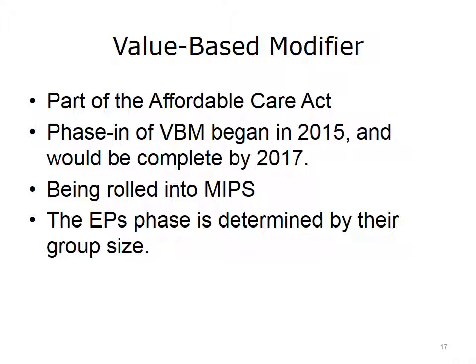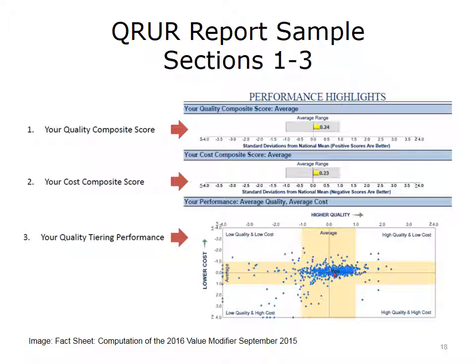Currently, the way the physician's penalty or incentive is calculated is based on something called the Quality Reporting and Utilization Reports, or QRUR. These reports are sent to providers to show their performance against VBM measures and help providers see how CMS is looking at value and PQRS data. This report sample shows that each EP has a composite quality score right at the top of the report. The composite score is developed through a series of calculations and takes into account all of the quality measures the EP reported, as well as the population of patients with whom the provider works.